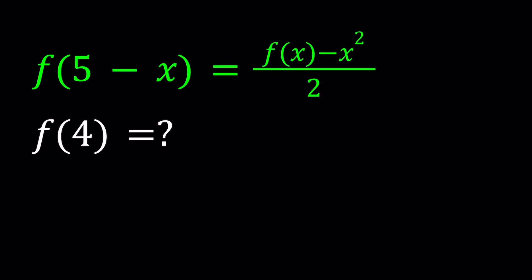So when you're given an equation like this and you're supposed to evaluate f of something, usually you try to replace x with that value, or you use an x value that will give us what we want. So in this case, it would make sense, since I need f of 4, why don't we let x equal 1.